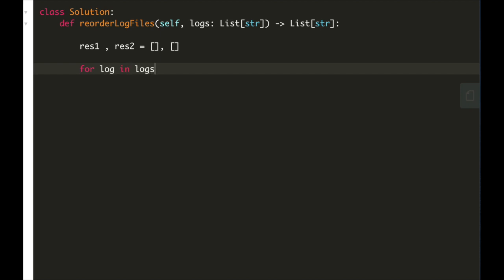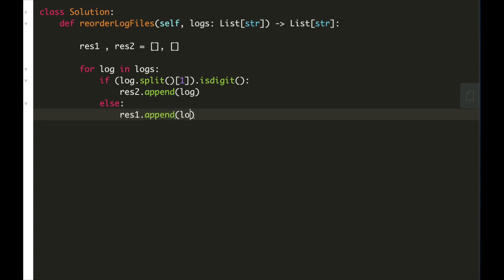For log in logs we will use split and isdigit to identify our digit-logs. So if log.split at index one, at index one is digit, we will append it to res2, else we will append it to res1.